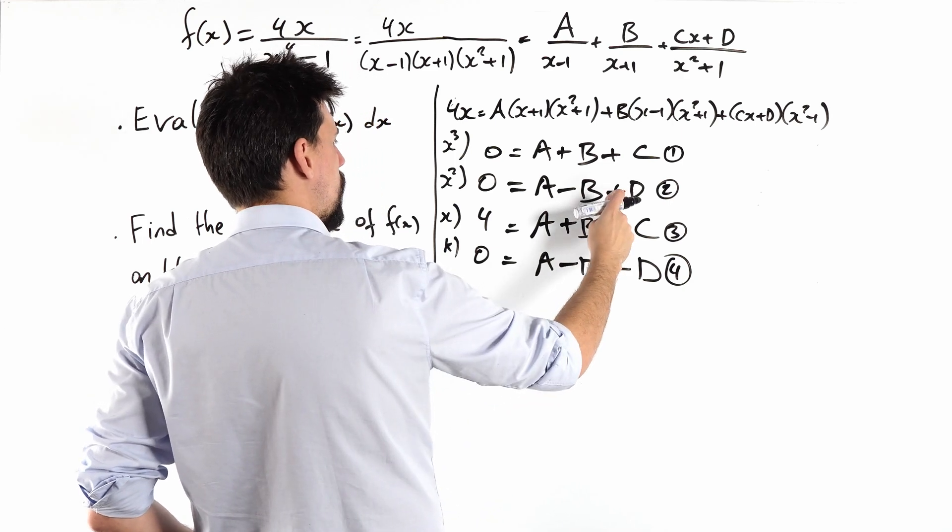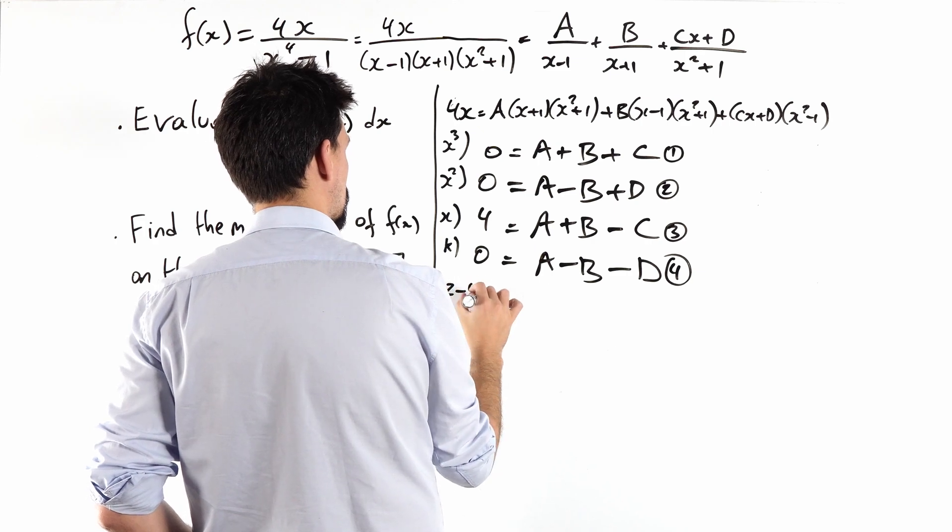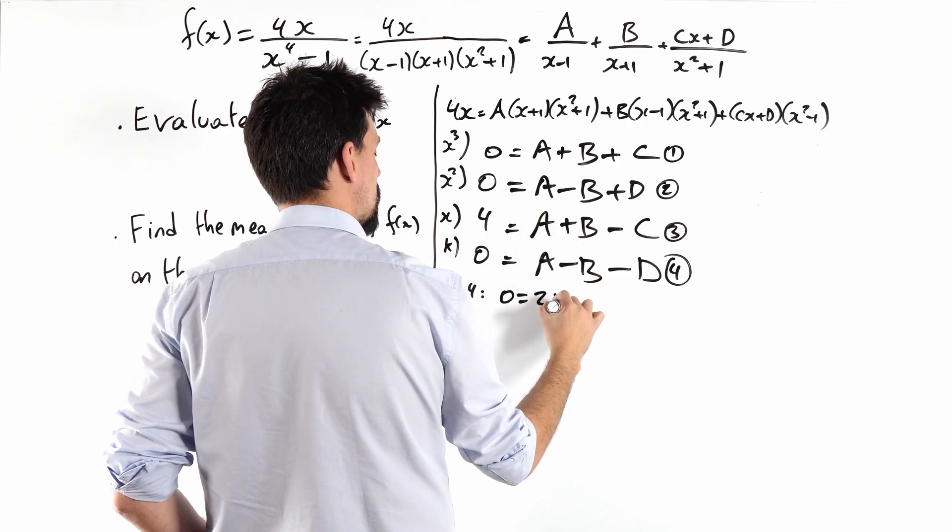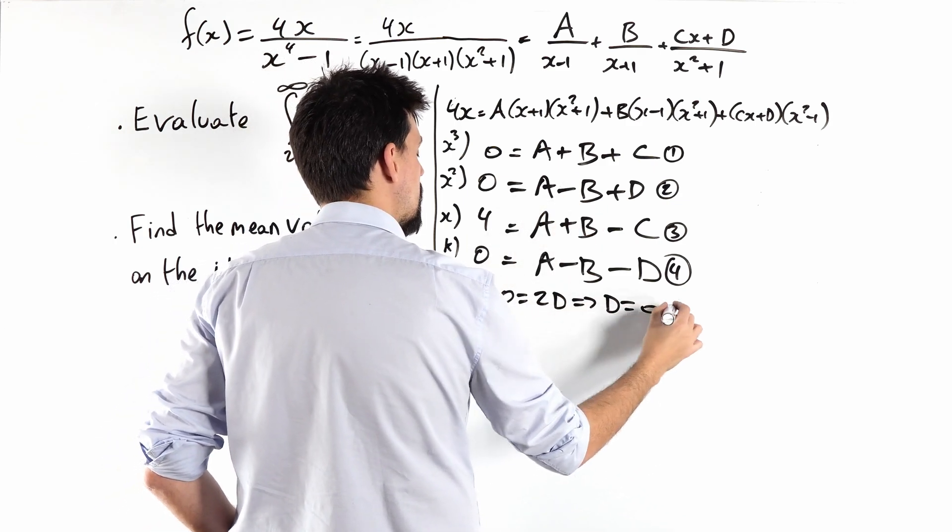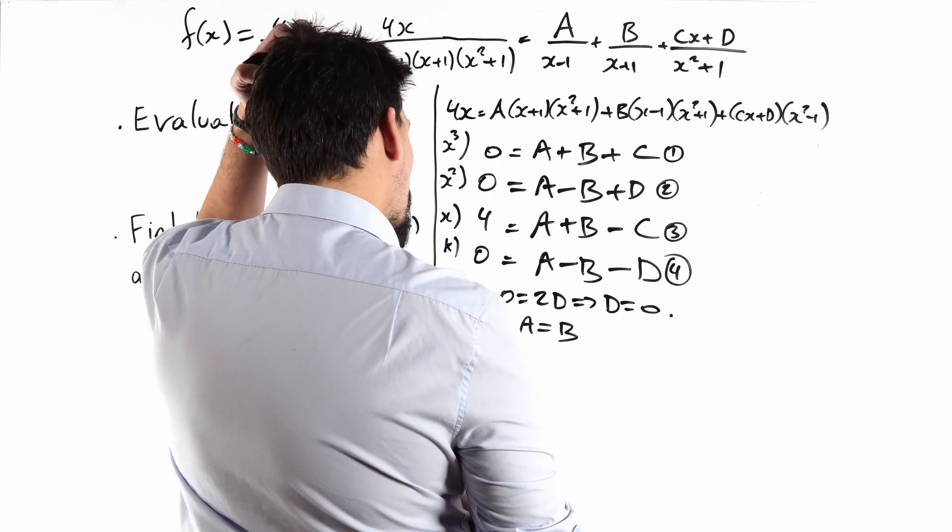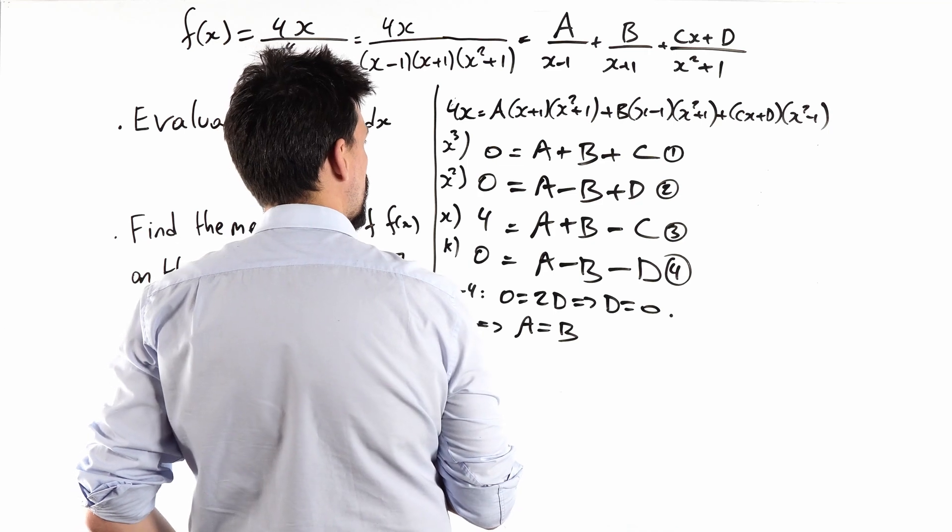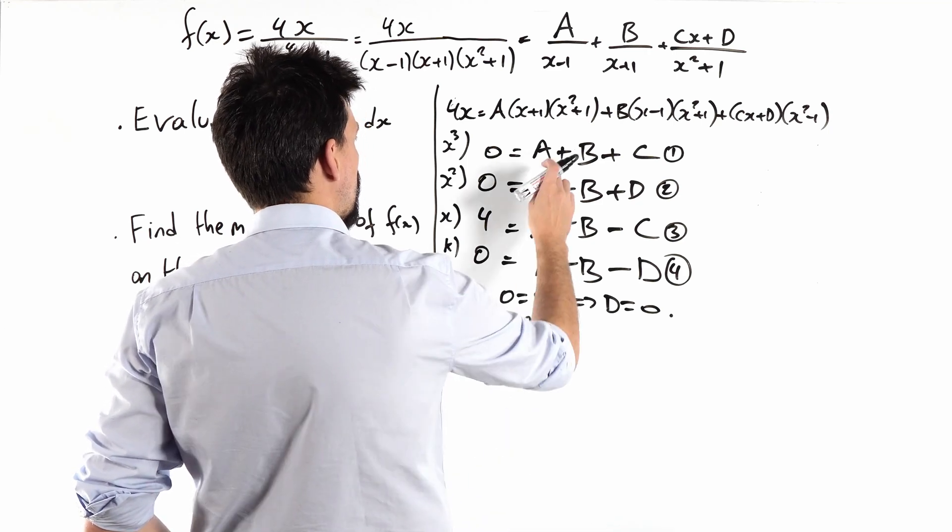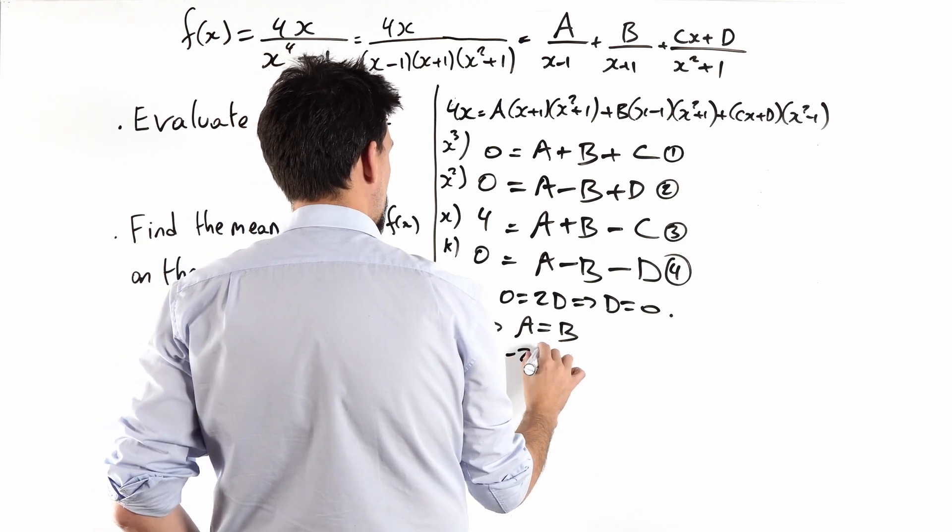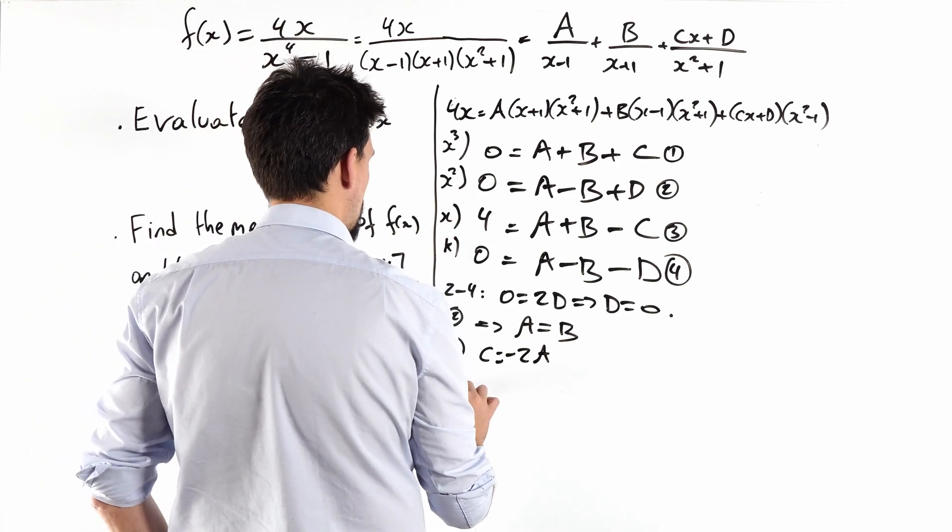I have a sneaky feeling that if I do equation 2 minus equation 4, I will get 0 is equal to 2d, which tells me that d is 0. And then equation 2 will therefore tell me that a is equal to b. Then equation 1 is going to tell me that c is minus 2a at that point. Then we put all of that into equation 3, and it should all come out.